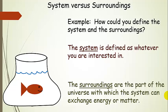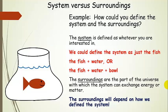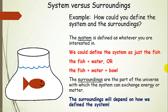So how could we define these systems and surroundings? Let's use a non-chemistry example. We have a fish and a fishbowl, and right now the fishbowl does not have a lid. The system is whatever you're interested in, so we can actually define it in a few different ways. We could say the system is the fish and the water, or just the fish — in which case the water would be the surroundings — or the fish and the water and the bowl, that's all the system.